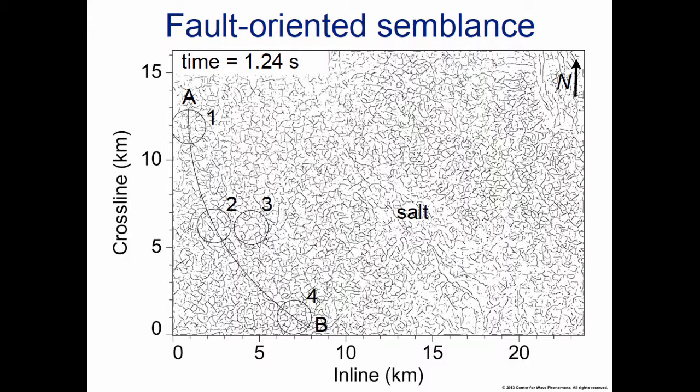This fault-oriented semblance here is not what I described yesterday when I was showing semblance. That structure-oriented semblance, the first smoothing is very similar to what I do here. What's different here is the second smoothing of the semblance numerators and denominators because I have to scan over all possible fault orientations in that second smoothing to be able to create good images of faults.